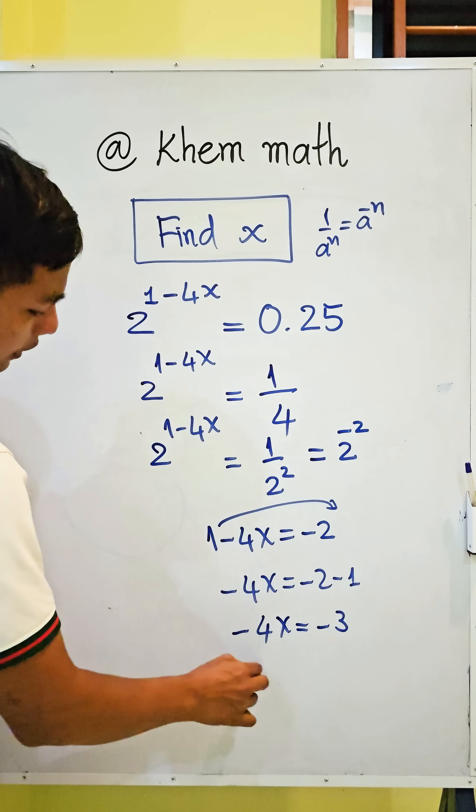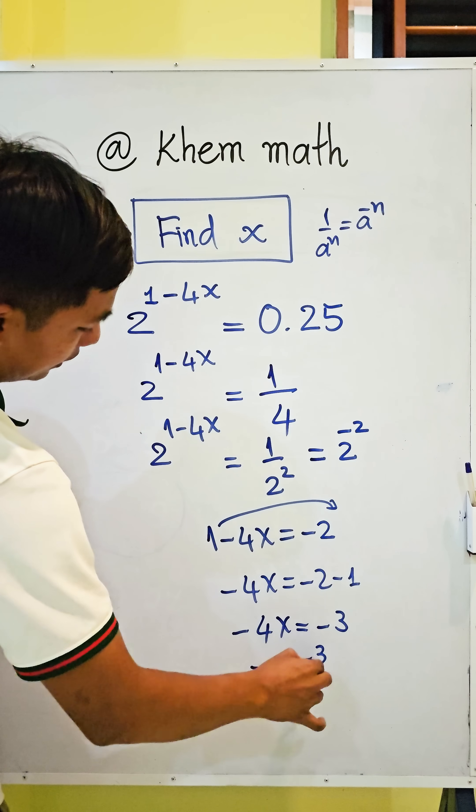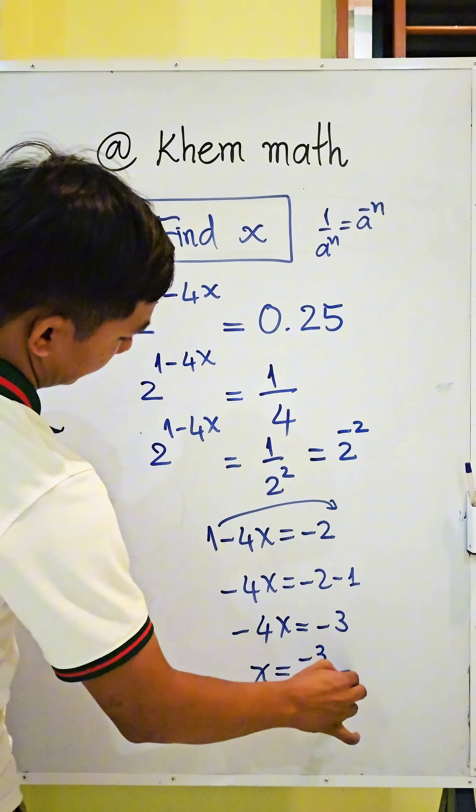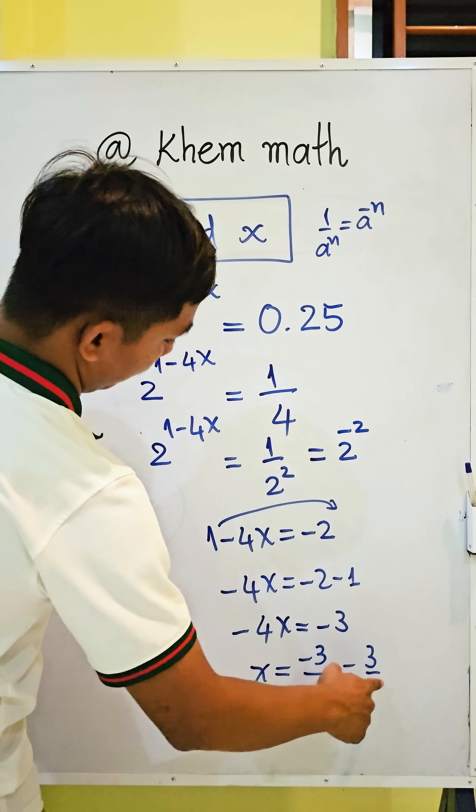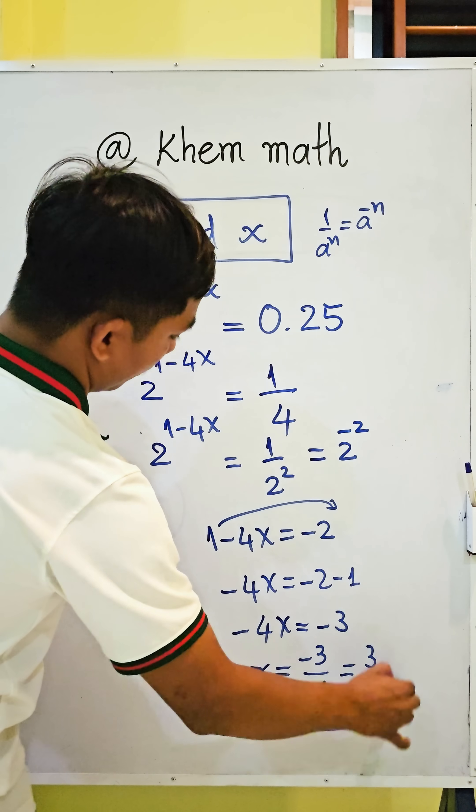We get x equals negative 3 divided by negative 4, which equals 3 divided by 4. This is our answer.